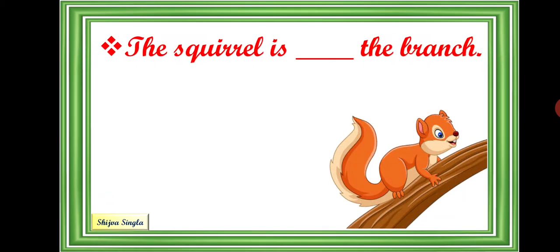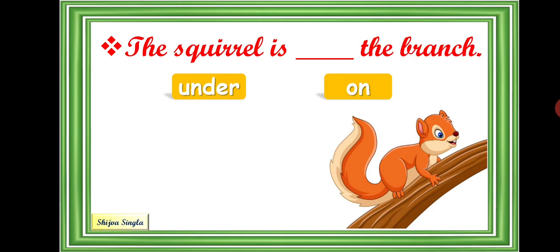The squirrel is dash the branch. Under or on? Well, the surface here is the branch. So, to refer to a surface, the preposition on is used. The squirrel is on the branch.